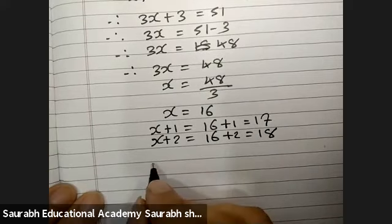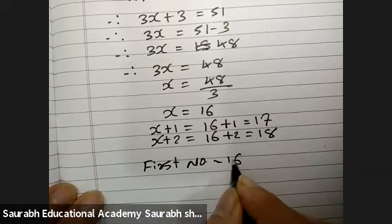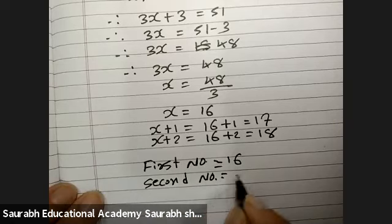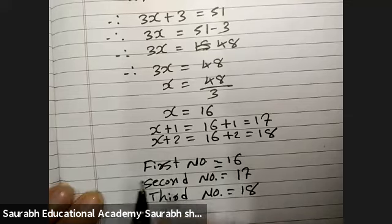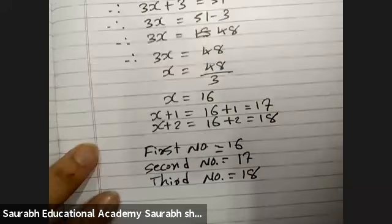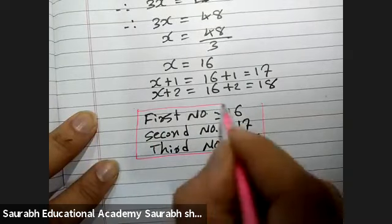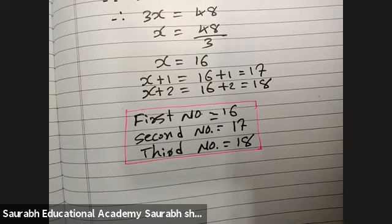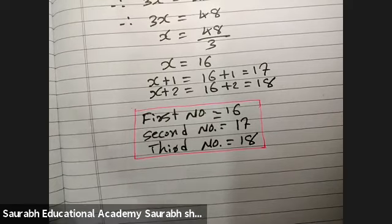So, three numbers are first number 16, second number 17, third number 18. Sum number 6. We will keep it up to this point.